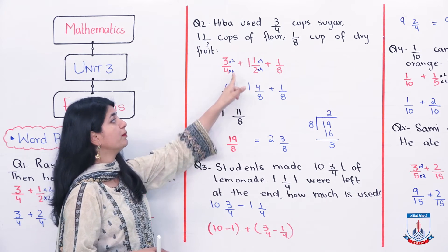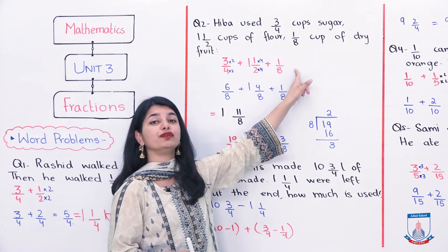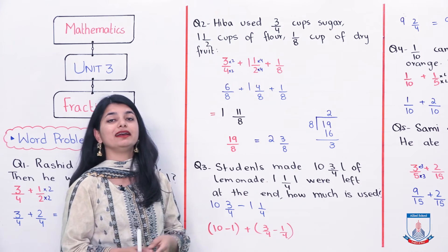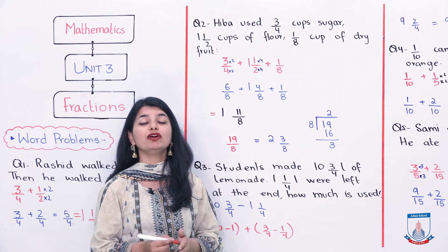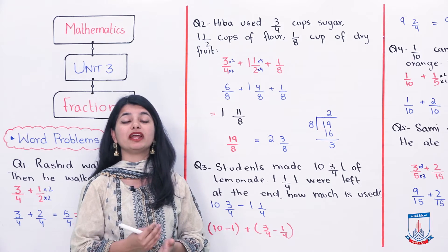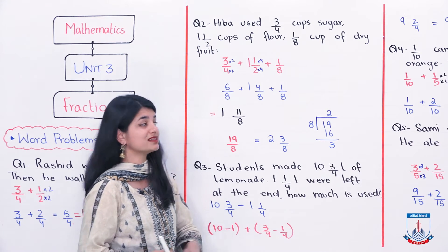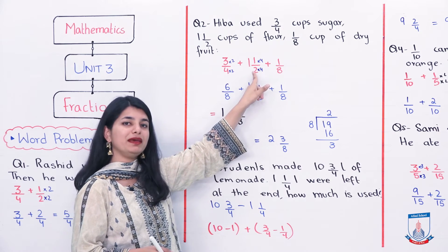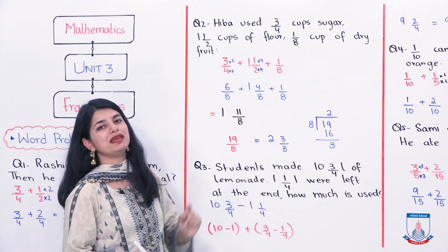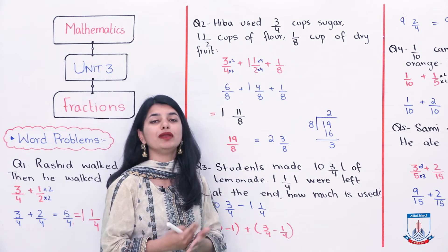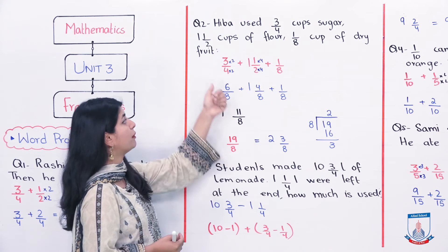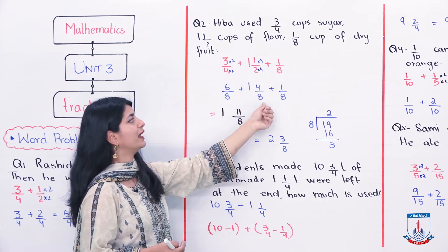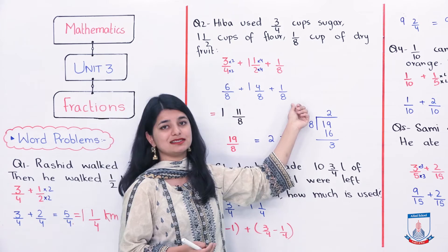So, you have to write 3 by 4 plus 1 whole 1 by 2 plus 1 over 8. These are 3 ingredients. Now, we have to add them. Again, the denominator is not the same. You have to find the LCM or you can see how they can be made the same. If you have 3 LCM, I can simply multiply 2 by 4. This is also 8. 4 by 2, this is also 8. 1 into 4, 4 over 8 and 1 over 8 as it is.